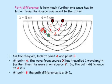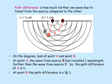More about two-point source interference pattern — now let's look at path difference. Path difference is how much further one wave has to travel from the source compared to the other. At point A, the distance from source X is four wavelengths, and from source Y to A is three wavelengths. So the path difference is one wavelength — four minus three.